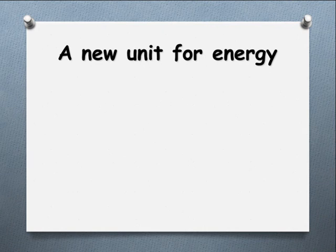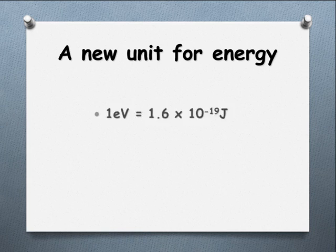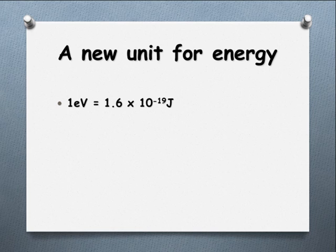Before we get into looking at photons, I just want to introduce a new unit for measuring energy. Traditionally we've used the joule, and that's the work done by a coulomb of charge moving through a potential of 1 volt. It is a large unit. The electron volt is the amount of energy that one electron would receive if it moves through a potential of 1 volt. So instead of a whole coulomb of charge, we're now analyzing for one electron. Compared to the joule, it's quite a small value.